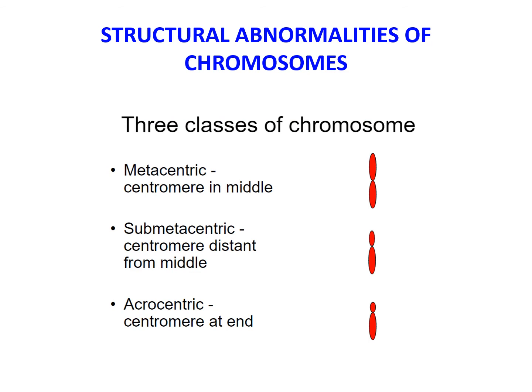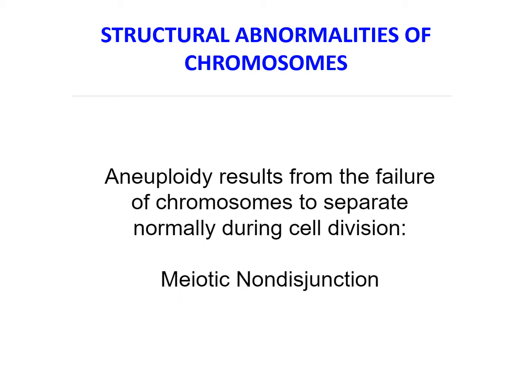There are three classes of chromosome according to the location of the centromere: metacentric, meaning the centromere is in the middle; sub-metacentric, where the centromere is distant from the middle; and acrocentric, where the centromere is at the end. If an error occurs in meiosis or mitosis and a cell acquires a chromosome complement that is not an exact multiple of 23, it is called aneuploidy. The usual causes for aneuploidy are non-disjunction and anaphase lag.